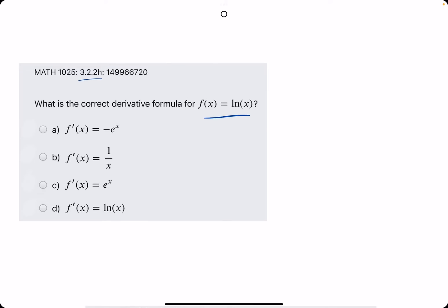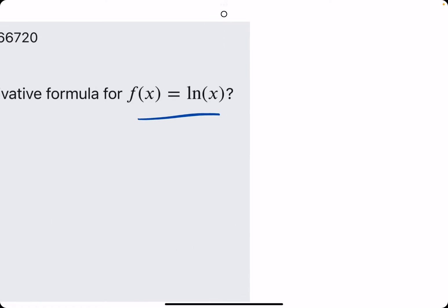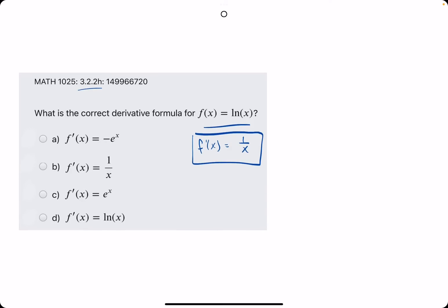They ask, in this problem, for the derivative of ln of x. And for this one, there's no procedure to it besides memorizing that the derivative for natural log of x is 1 over x. So we break out the eraser to see that b is our answer.